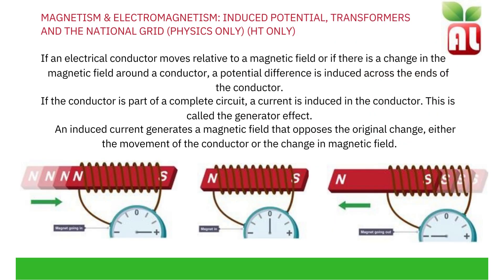Induced potential, transformers, and the national grid. If an electrical conductor moves relative to a magnetic field, or if there is a change in the magnetic field around a conductor, a potential difference is induced across the ends of the conductor. If the conductor is part of a complete circuit, a current is induced in the conductor. This is called the generator effect. An induced current generates a magnetic field that opposes the original change — either the movement of the conductor or the change in the magnetic field. Moving a magnet in and out through a coil of wire induces this potential difference.